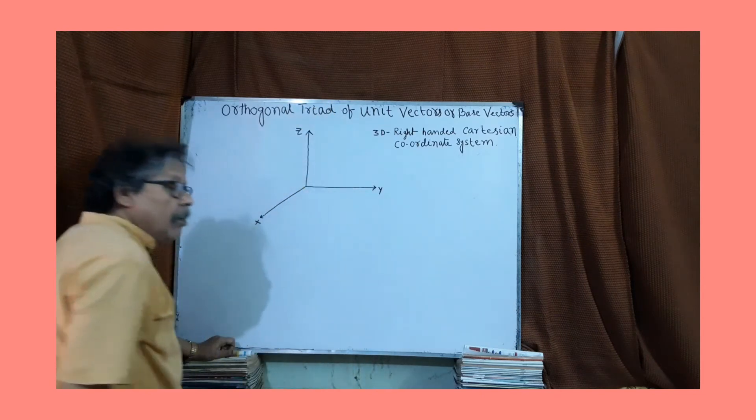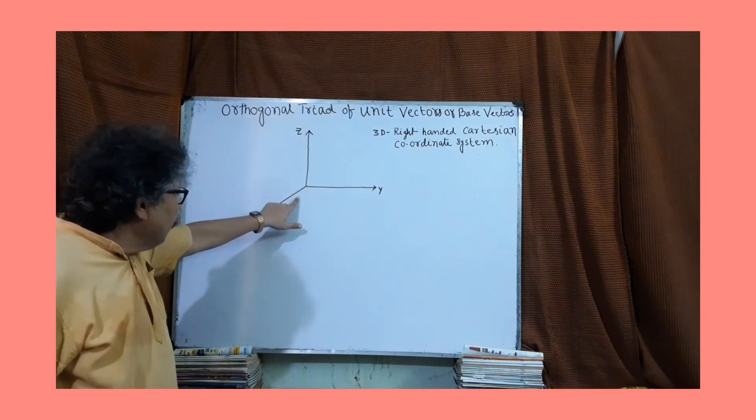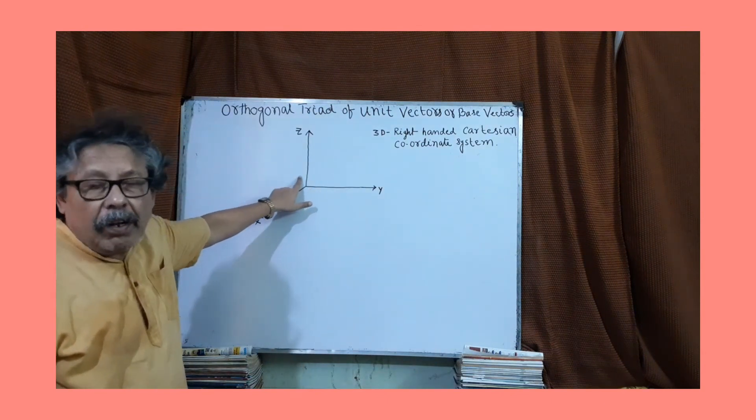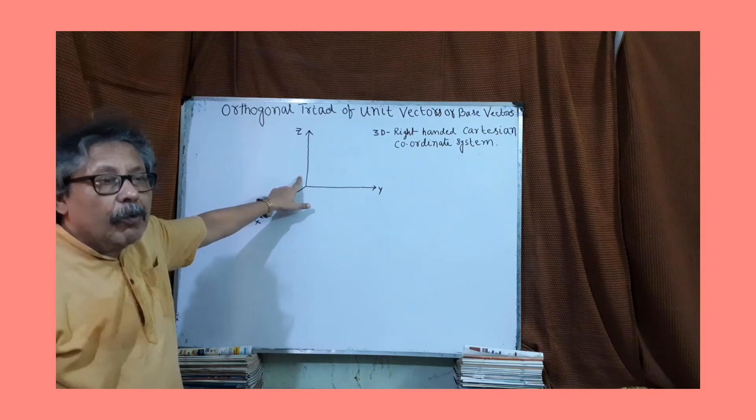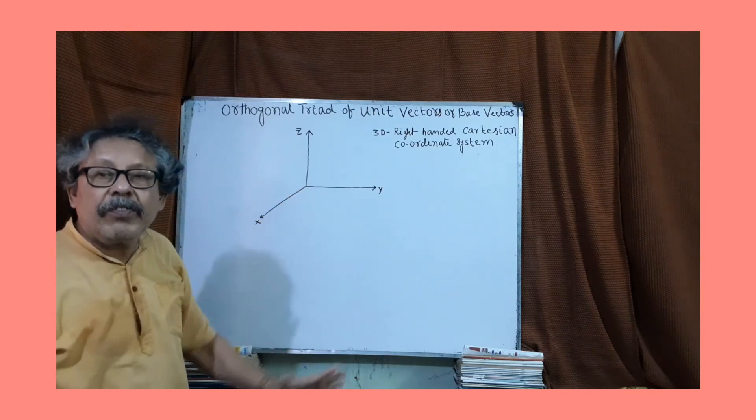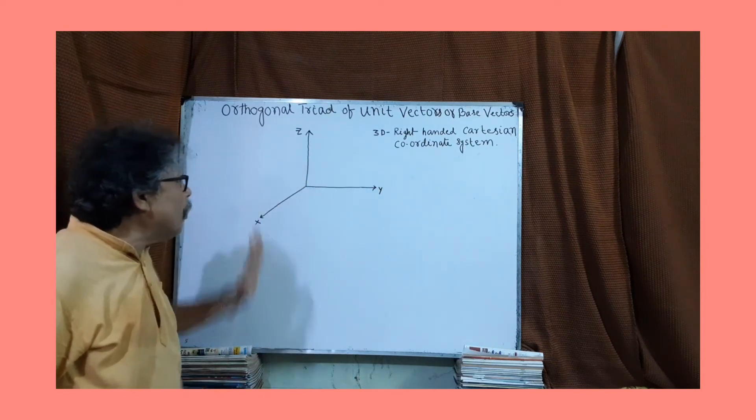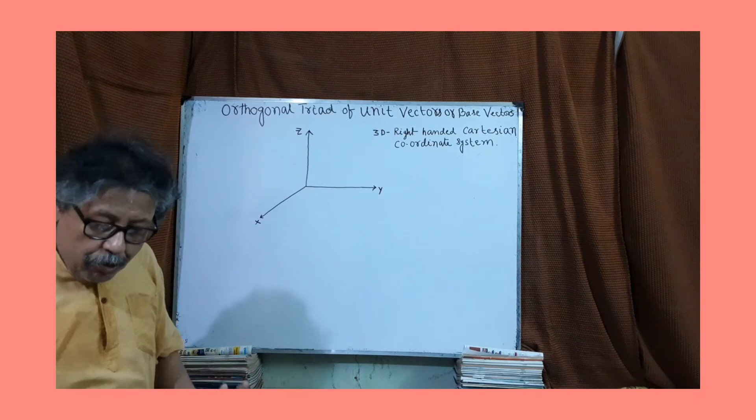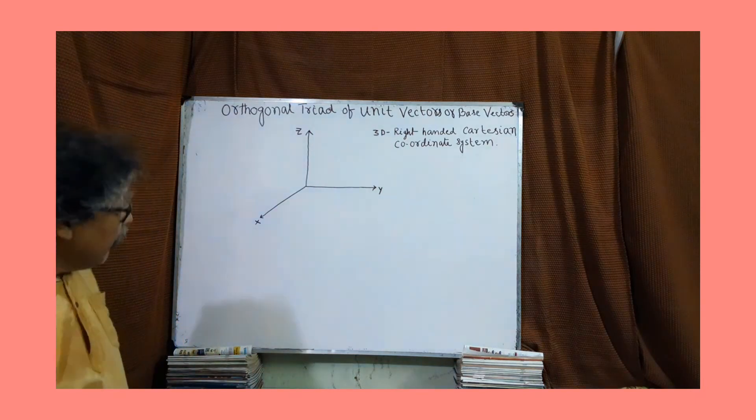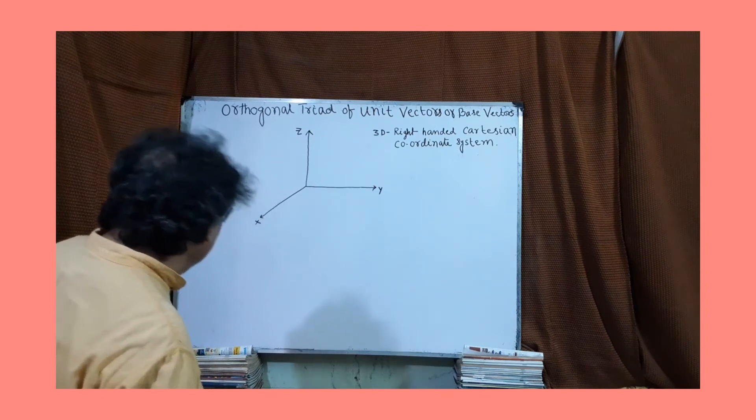Now we know these three axes. As we know, these three axes are mutually perpendicular. What we call this is orthogonal system. Orthogonal means they are mutually perpendicular. These three axes are mutually perpendicular. I assume that we have already learned it.